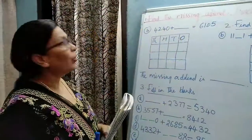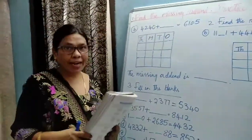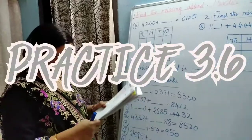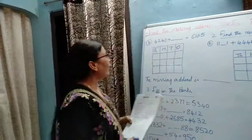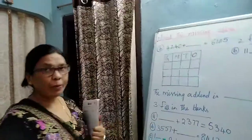Good morning children. Today we will solve practice 3.6, page number 57. In that, two bits are there.